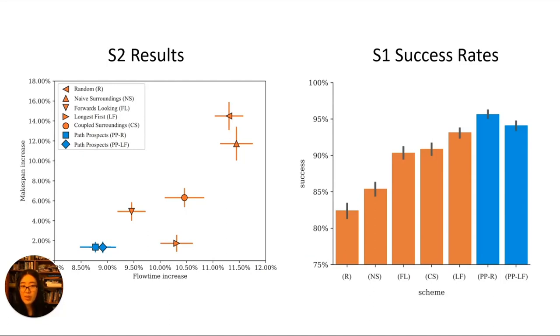We assume that once a robot reaches its goal location it stays in place, so it's possible to reach fail states where a robot at its goal blocks another robot from reaching its goal. However, we can see that our methods achieve the higher success rates.